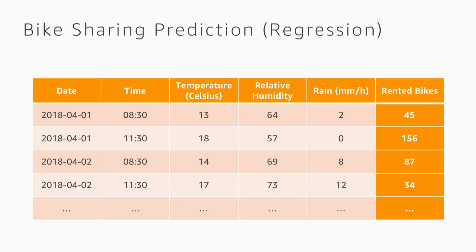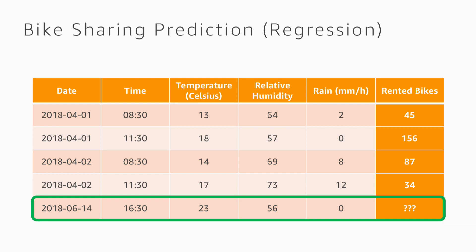With time series this works very well because it's an example of supervised machine learning. We have lots of previous labeled data, and the label is the same one we want to predict in the future. For example, let's say we want to build a model to predict how many bikes are rented in a public bike-sharing scheme, and we want to predict what happens today at 4:30.